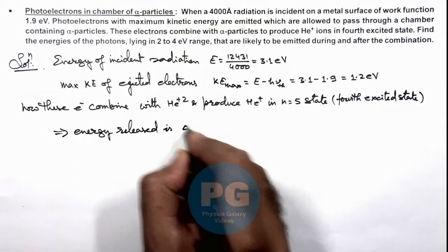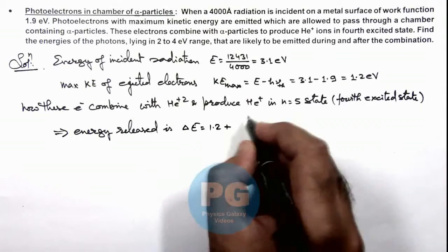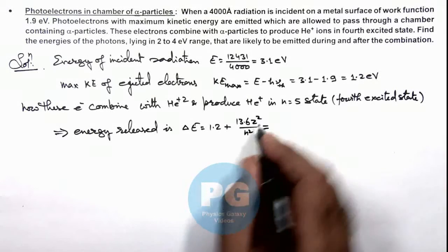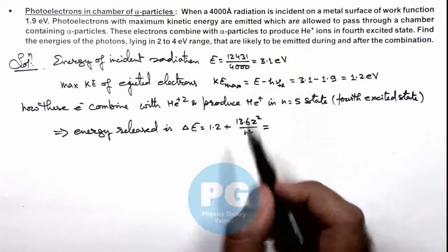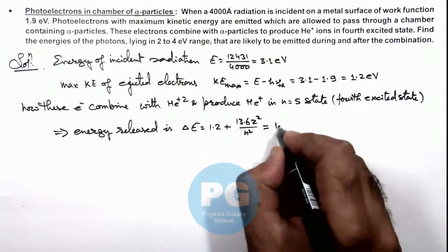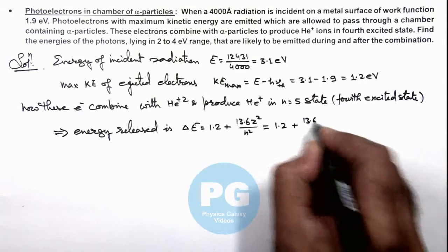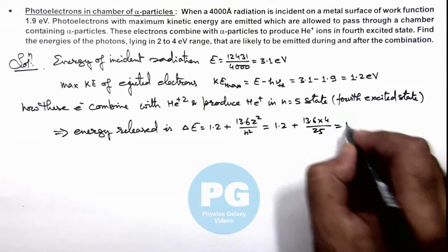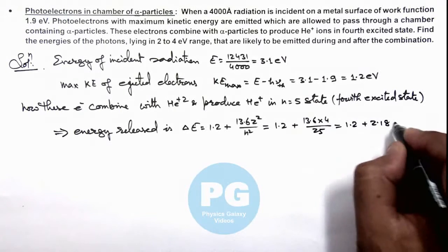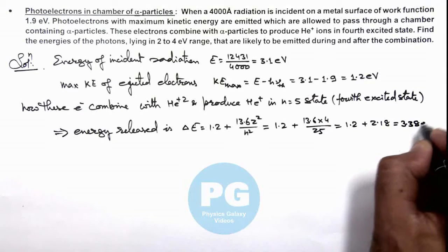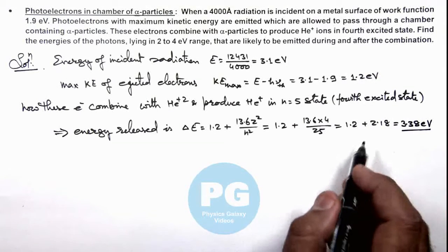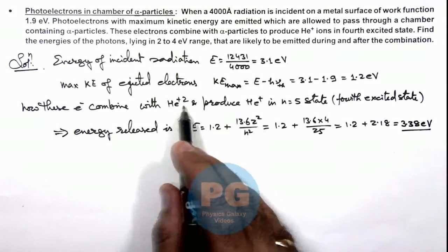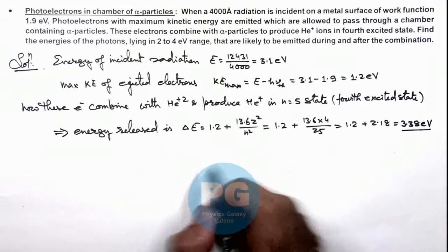So in this case, 1.2 electron volt is the kinetic energy of these electrons, and when they drop from the infinite orbit to n equals 5, we can write down the energy released. This delta E should be 1.2 plus 13.6 Z² by n². For Z equal to 2 for helium and n equal to 5, this is 1.2 plus 13.6 multiplied by 4 by 25, which numerically is 1.2 plus 2.18, that is equal to 3.38 electron volt. So this is the energy of the photon released when these electrons combine with He²⁺ and transform to He⁺ in the 4th excited state.